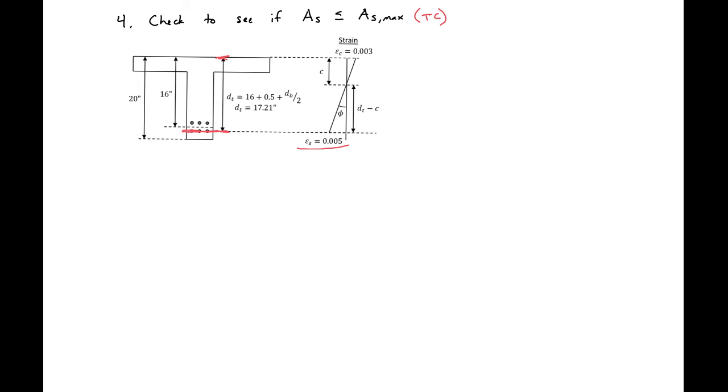We can use these values to find our neutral axis when we're tension controlled. We're looking for our C here. We'll do this by setting up our similar triangles. We'll have 0.003 over C equals 0.005 over D sub t which is 17.21 inches minus C. We can solve for C here and we'll get C equal to 3/8 times 17.21 inches. So we'll get C equal to 6.43 inches.